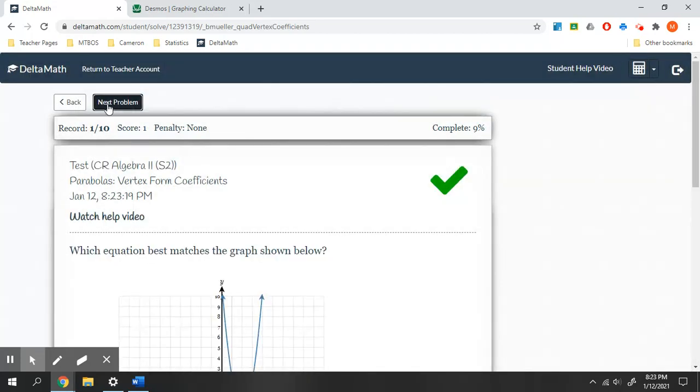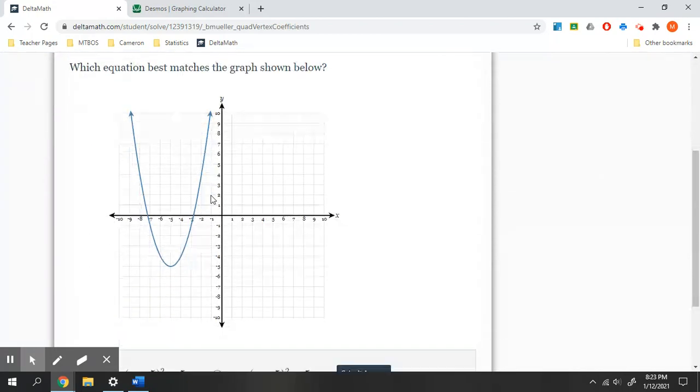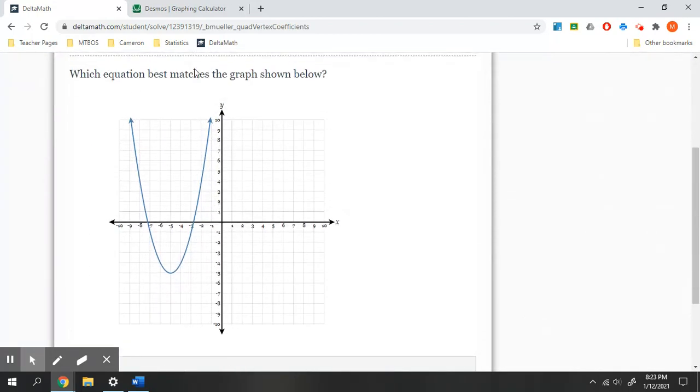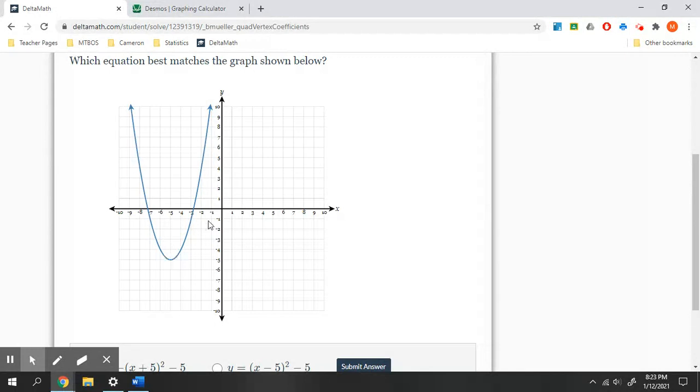Let's do one more together. For this one, which equation best matches the graph shown below? Looking at this, which equation matches this graph? Our vertex, we've gone left 5, down 5.